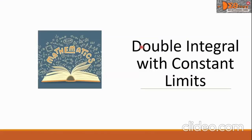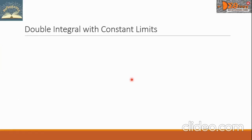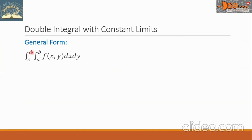Hi everyone. Today we're going to study double integral with constant limits. The general form is here: the double integral from c to d and from a to b of a function f(x,y) dx dy. Take note that in here, the dx comes first, followed by dy.